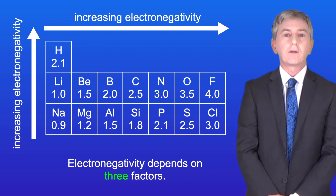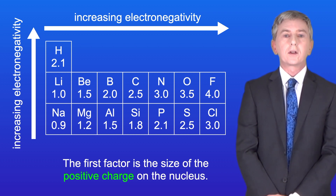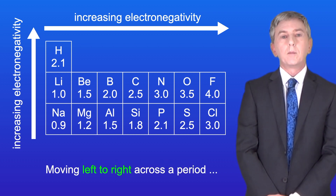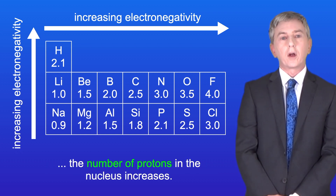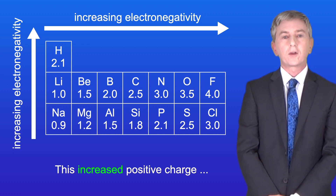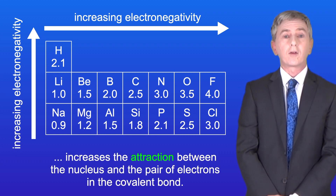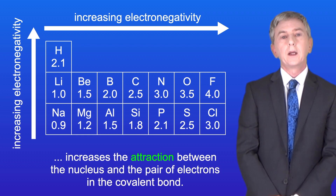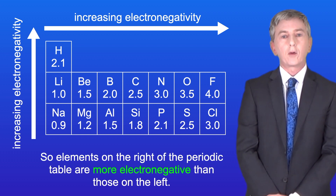Electronegativity depends on three factors. The first factor is the size of the positive charge on the nucleus. Moving left to right across a period, the number of protons in the nucleus increases. This increased positive charge increases the attraction between the nucleus and the pair of electrons in the covalent bond, so elements on the right of the periodic table are more electronegative than those on the left.